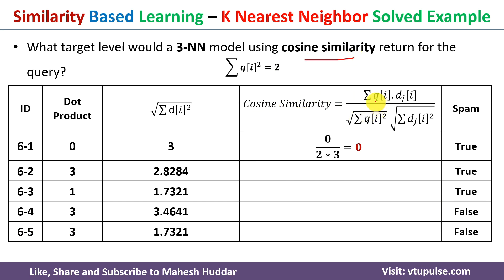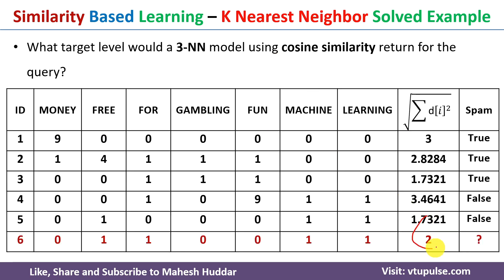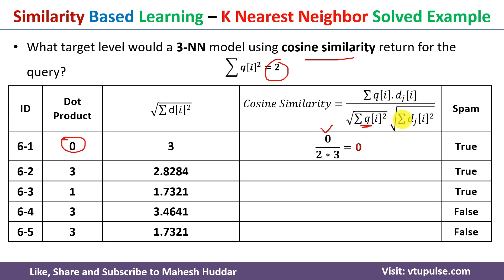The cosine similarity equals the dot product between qi and dj — which is 0 for the first example — divided by the square root of the summation of qi squared, which is 2, multiplied by the square root of the summation of dj squared, which is 3. Solving this gives a cosine similarity of 0 for the first example.